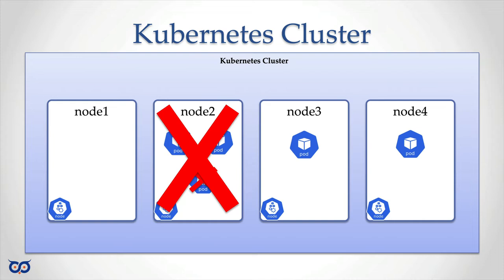This is one of those cases where if we add a replica set, when our pod died the first time the replica set would ensure that it creates another pod. And then if that host went away with those pods on it, Kubernetes — with the replica set — would notice and say: I need to recreate not just one pod but two pods, if that's the number of replicas I have.